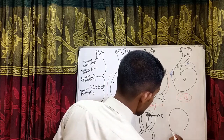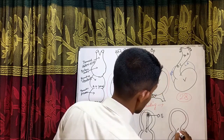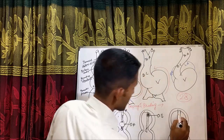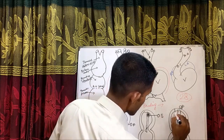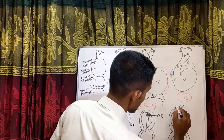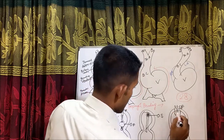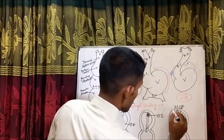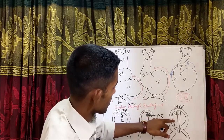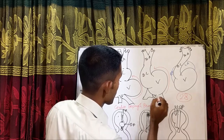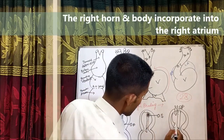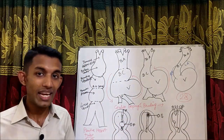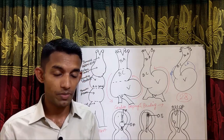This is septum primum. Then one more septum develops from the roof of the common atrium — that is septum secundum. There is also sinus venosus. This is the area of sinus venosus; it has two horns: one is the left horn and another is the right horn. The left horn gives rise to the coronary sinus. In this area of sinus venosus, if there is any defect, it is called sinus venosus defect. Sinus venosus defect is of two types: superior and inferior.